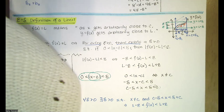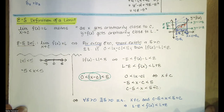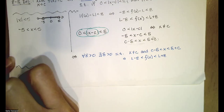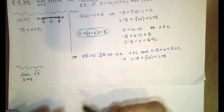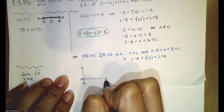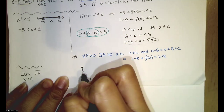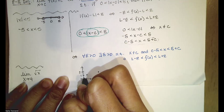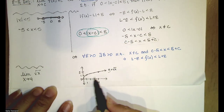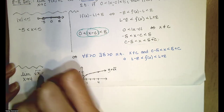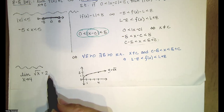Now let's look at this on Desmos for a particular example. Consider the limit as x approaches four of the square root of x. The square root of x is a continuous function, and since it's continuous, the limit equals the function value. The square root of four is two, so the limit as x approaches four of the square root of x equals two.